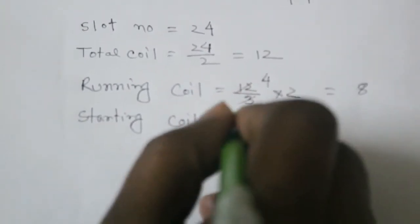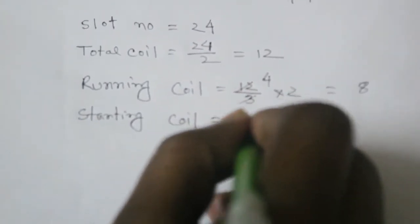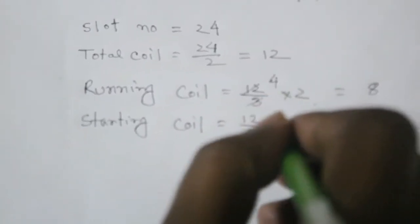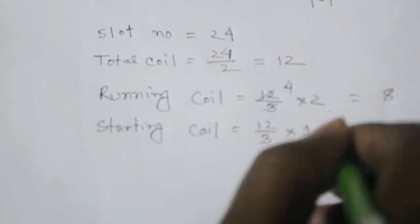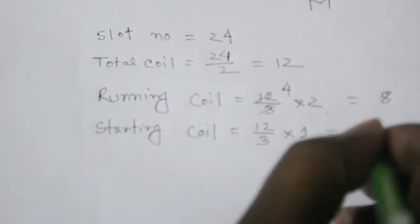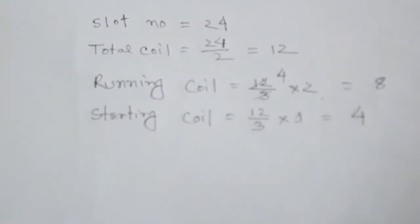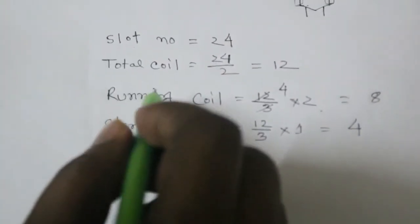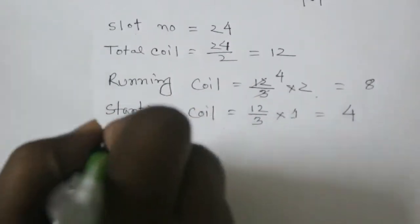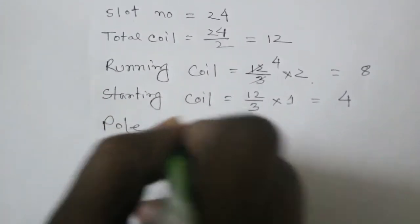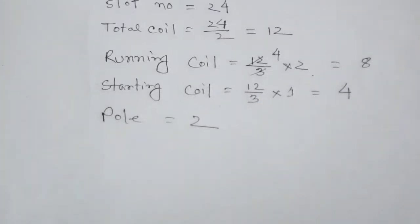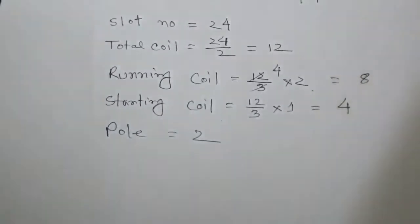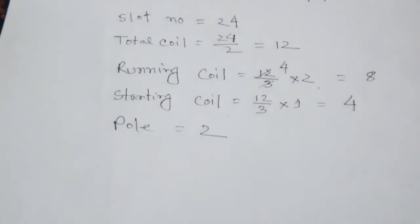The starting coil is twelve divided by three into one part, so it is four. So the running coil is eight and the starting coil is four.